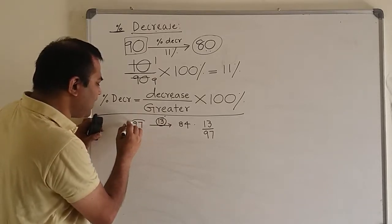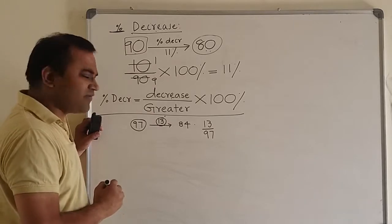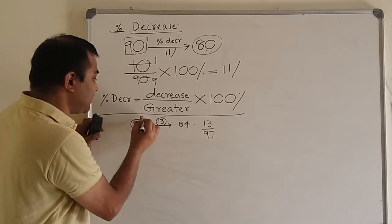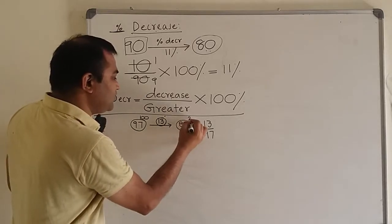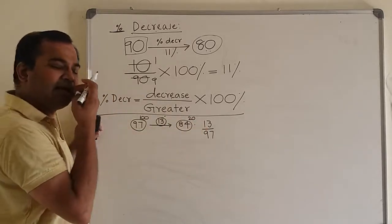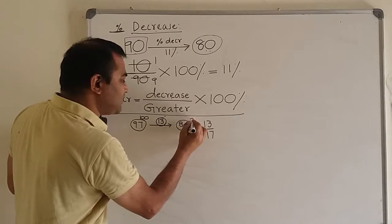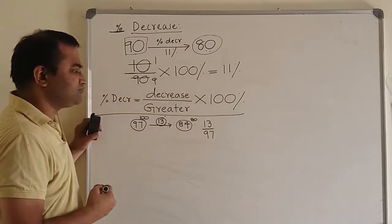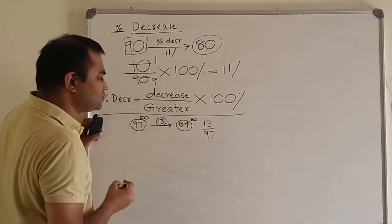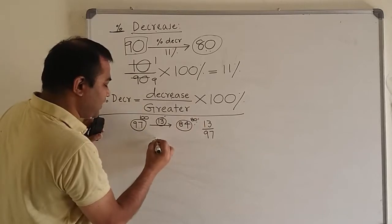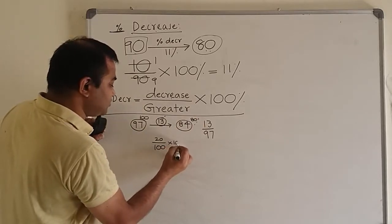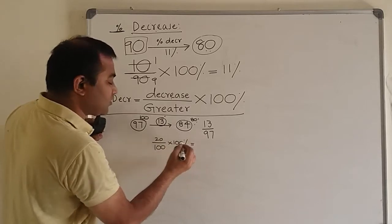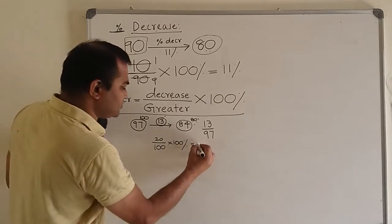What I will do is I will take 97 roughly as 100, and 84 roughly as 80. Then the amount of decrease from 100 to 80 is 20 on 100. This will give me what approximate decrease? Of course it will be 20 percent only, roughly.